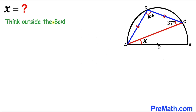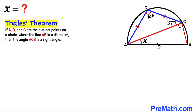Now we are going to think outside the box and connect points B and C. Recalling Thales' theorem: if A, B, and C are three distinct points on a circle where AB is a diameter, then angle ACB is a right angle — in other words, a 90-degree angle. So angle ACB turns out to be 90 degrees.